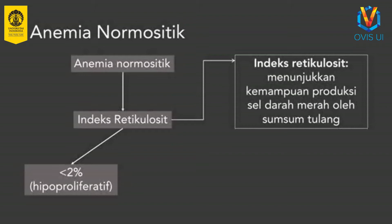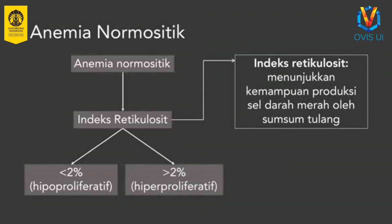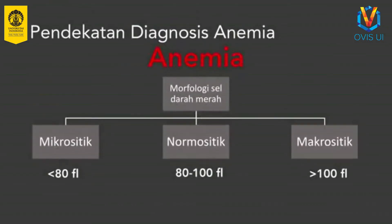Jika indeks retikulosit tidak meningkat pada kondisi anemia atau indeks retikulosit di bawah 2%, perlu dipertimbangkan adanya gangguan produksi sel darah merah di sumsum tulang. Anemia akibat gangguan produksi ini disebut sebagai anemia hipoproliferatif. Jika ditemukan indeks retikulosit meningkat atau lebih dari 2%, disebut sebagai anemia hiperproliferatif.